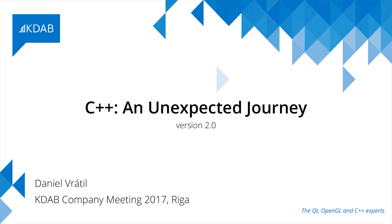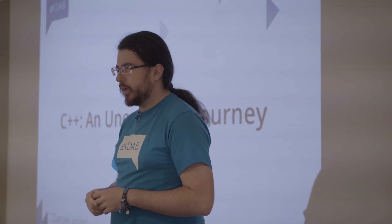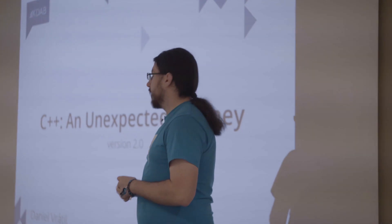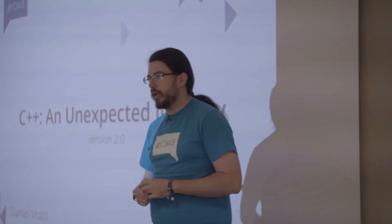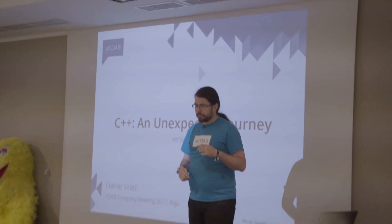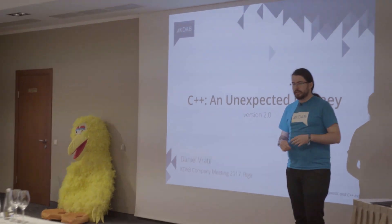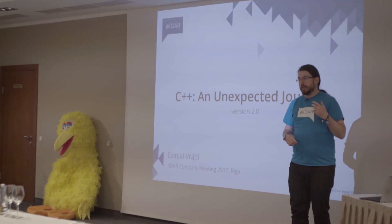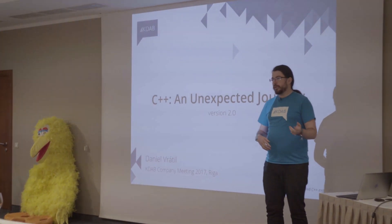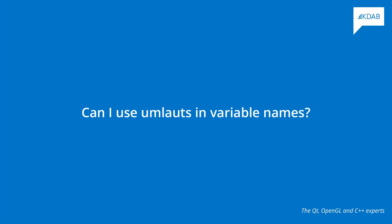I want to tell you about a great journey into a particular — let's call it a feature — of the C++ language that I underwent last year. Shortly before the CM there was a conference in Berlin, and we were sitting in the Berlin office with a few other key Debians in the evening, hacking on some software, drinking beer, and someone in the room suddenly asked the question: can I use umlauts in my variable names?